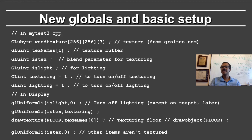In the display routine, I initially set IsLight to 0 to turn off lighting, except we'll turn it on later for the teapot. I set the IsTex flag to texturing and draw with texture the floor, providing it the texture name 0, which is the texture buffer. Finally, I set IsTex to 0 to ensure that other items are not textured.